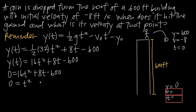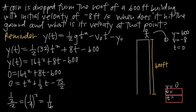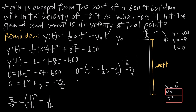Now for completing the square: take the coefficient on the t term, which is one-half, divide by 2 to get one-fourth, then square that to get 1 over 16. So 1 over 16 is the value we add to make a perfect square. We get 0 equals t squared plus one-half t plus 1 over 16, but because we added 1 over 16 we must also subtract 1 over 16, giving us minus 1 over 16 minus 75 over 2. This part in parentheses is now a perfect square: quantity t plus one-fourth, squared.